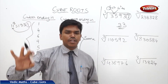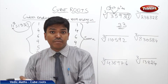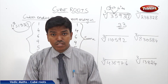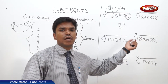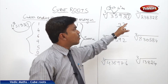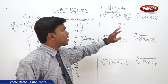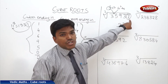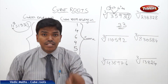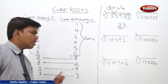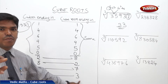Unlike square roots where you need to check two possibilities, here we get only one possibility, so you can directly state the answer. To summarize: first, partition the digits into groups of 3 from the right. Second, check the last digit of the cube number — if it ends in 7, the cube root ends in 3. Third, find which cube numbers the second partition falls between and take the lesser number. You need to remember that table.